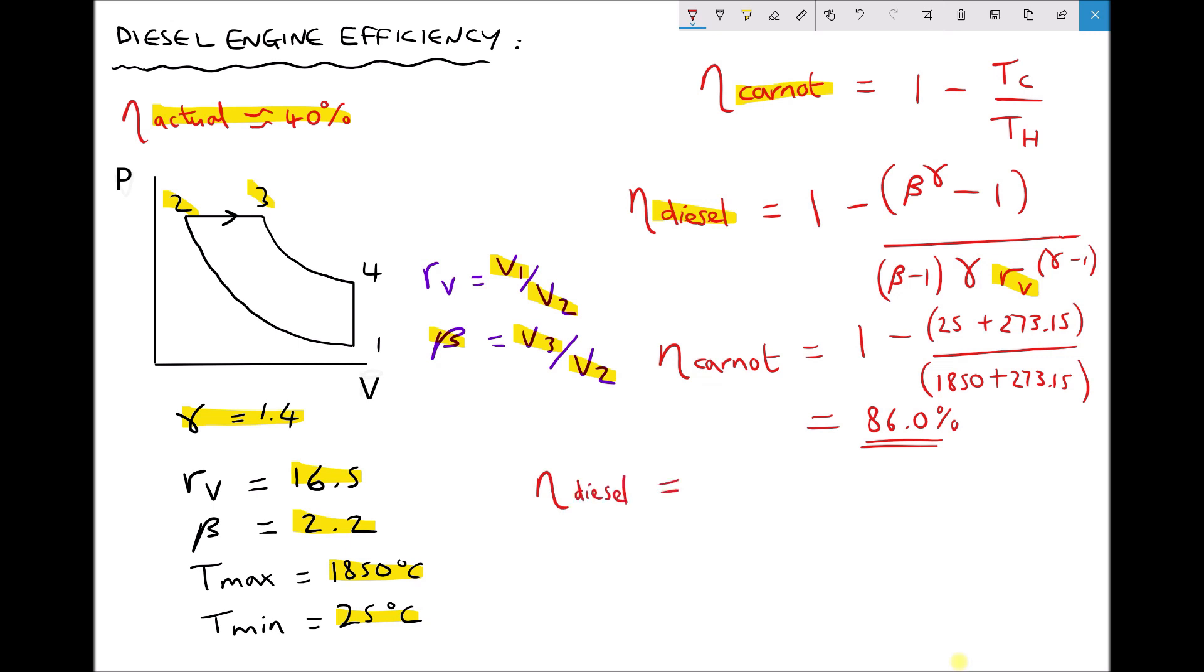We have diesel efficiency equal to 1 minus. Now at the top of our fraction is beta to the power of gamma minus 1. Beta we've said is 2.2. Gamma is 1.4 minus 1, all in brackets.